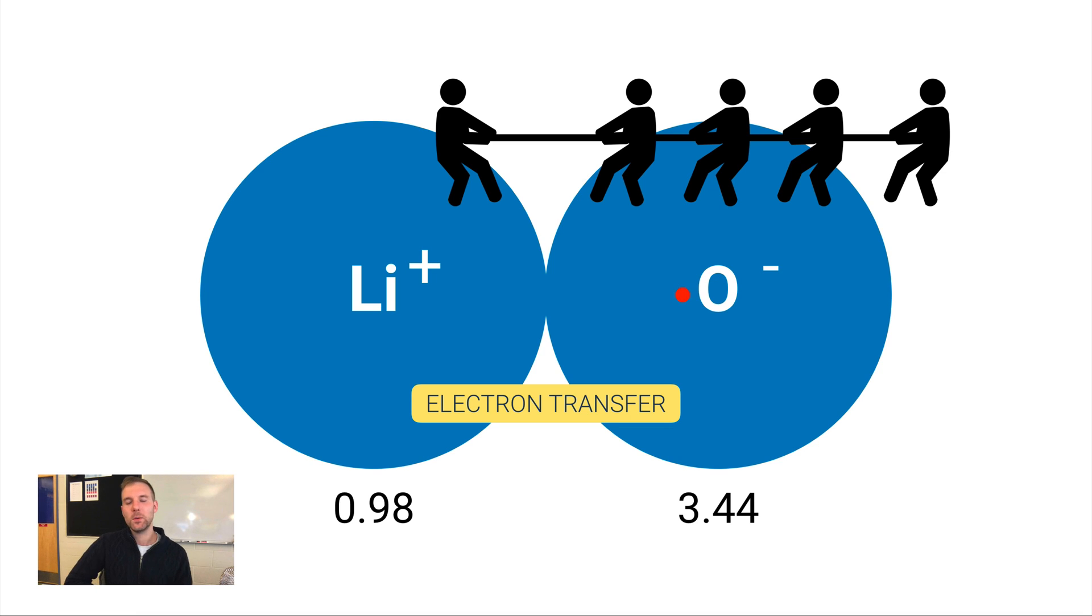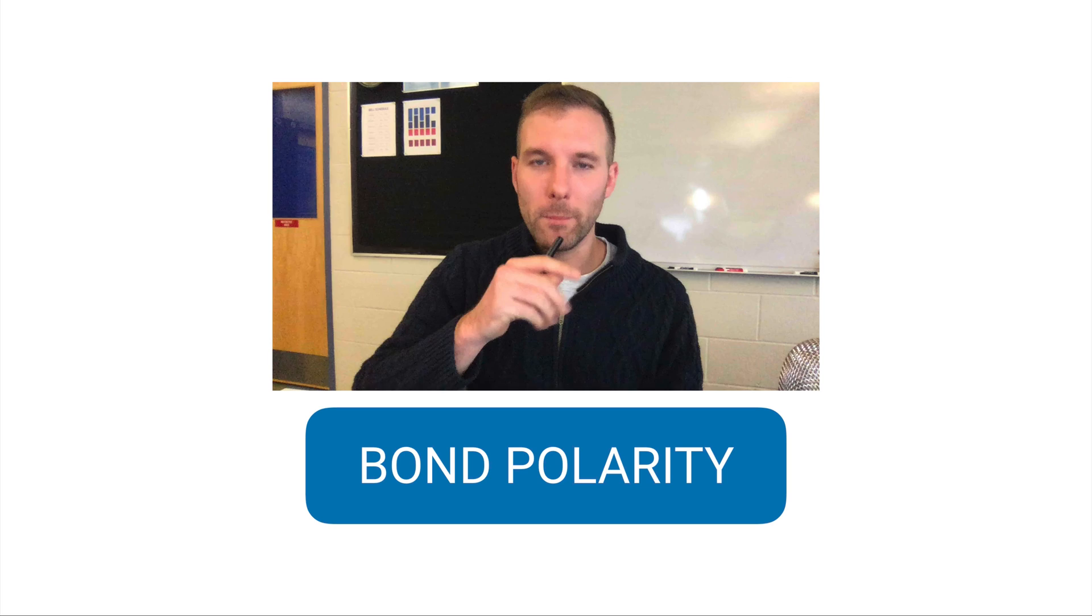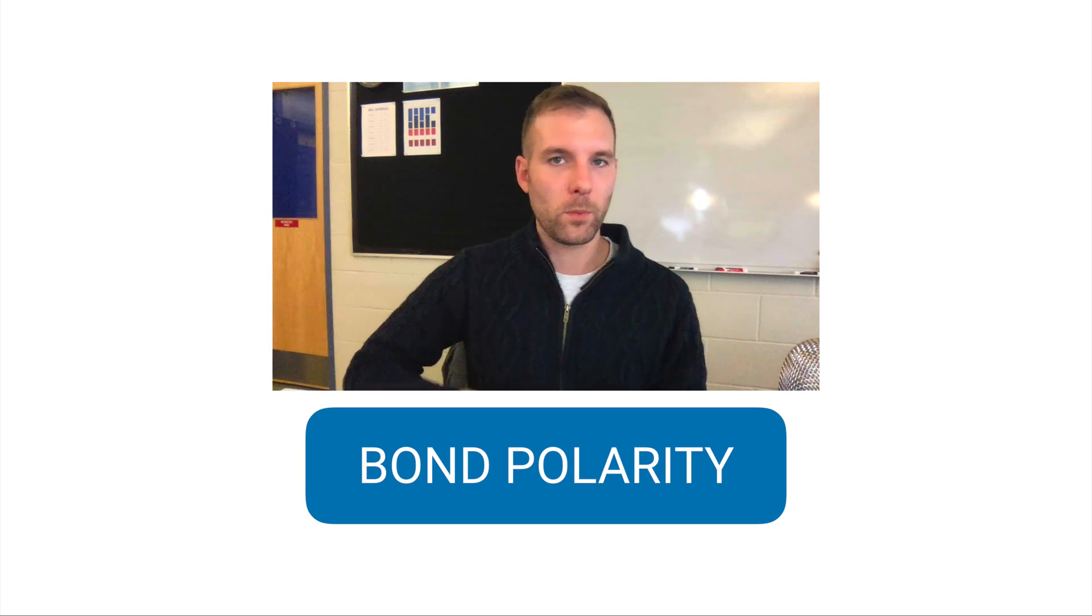We've kind of slipped away from the covalent bond realm completely. We're now into the ionic bond area. So electronegativity values can certainly help us figure out if a covalent bond is non-polar or polar. Zero to 0.4 would be a non-polar covalent bond. 0.41 to 1.7 would be a polar covalent bond. But beyond that, we actually slip into the ionic bond territory. Thank you.